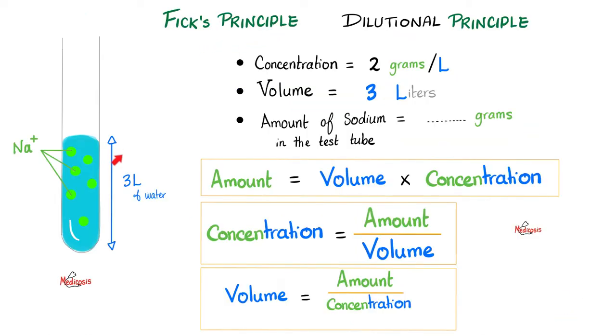Do you remember the Fick principle? If I gave you a test tube containing 3 liters of water, each liter has 2 grams of salt. How much salt is in the entire sample? Easy. 2 times 3 equals 6 grams. Amount equals volume times concentration.